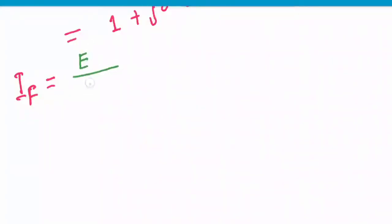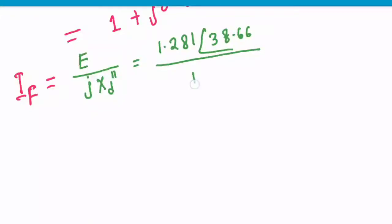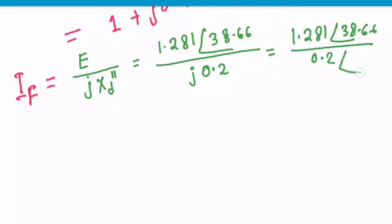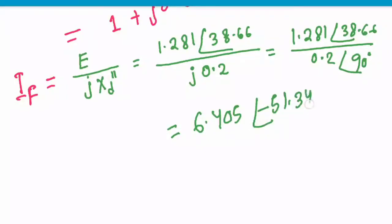The fault current equals E divided by j·Xd double prime. This gives 1.281 angle 38.66 divided by j·0.2, which equals 1.281 angle 38.66 divided by 0.2 angle 90, resulting in 6.405 angle minus 51.34 degrees per unit. So the fault current is 6.4 per unit, which is 6.4 times the rated current. Thank you for watching.